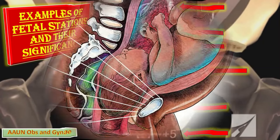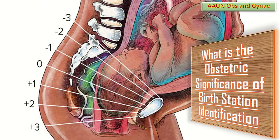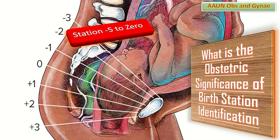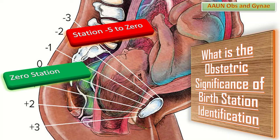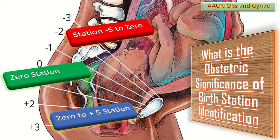The obstetric significance of fetal station identification: from minus 5 to 0, the presenting part is above the ischial spines — this is known as floating, and the doctor may sometimes feel the presenting part. At zero station, the baby's head is engaged and aligned with the ischial spines. From zero to plus 5, positive numbers indicate the baby has descended beyond the ischial spines, with plus 4 to plus 5 indicating imminent delivery.